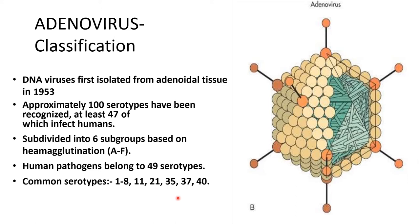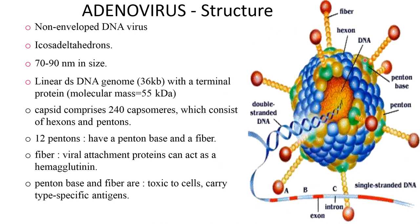Common serotypes are 1 to 8, 11, 21, 35, 37, and 40. Adenovirus structure: it is a non-enveloped DNA virus with an icosahedral structure, and a size of 70 to 90 nanometers. It has a linear double-stranded DNA genome consisting of 36 kilobase pairs.